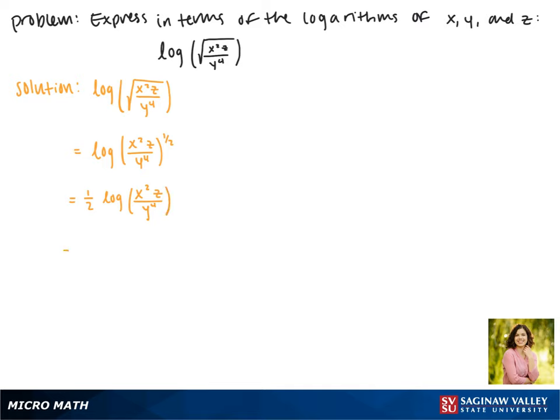Now because we're dividing by y to the fourth we can separate this to be one-half times the log of the top, x squared z, minus the log of the bottom, y to the fourth.